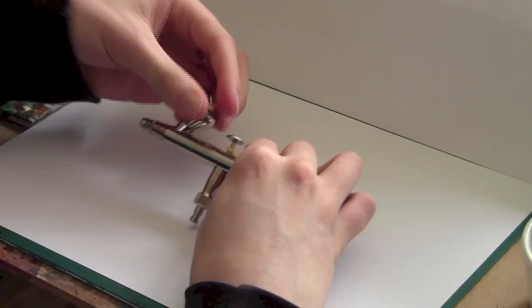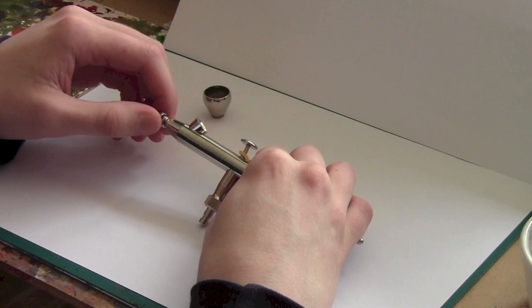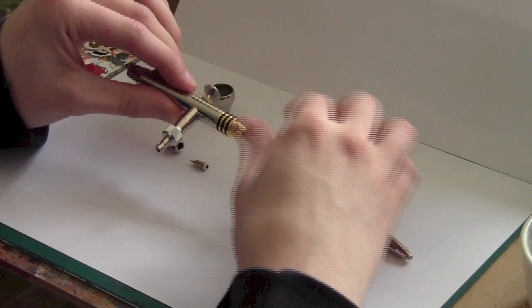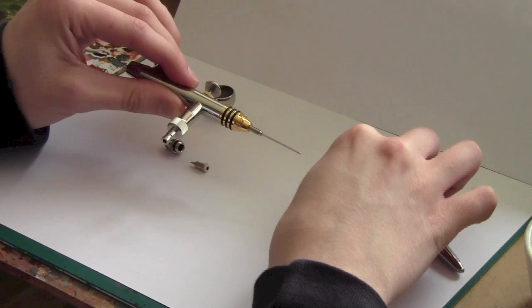So first you'll probably want to remove the paint cup just so you can give that a really thorough clean. And you're going to remove the head here and remove the needle cap out. This should all have paint on it which will need cleaning. And then you can go ahead, same as before, and remove the needle from the airbrush. You've got to be very careful not to bend the needle when you remove it.